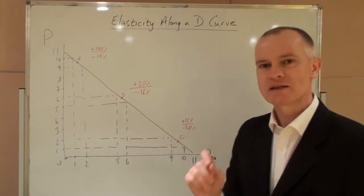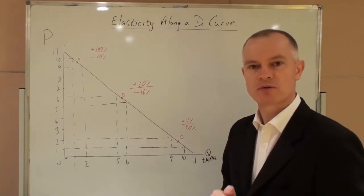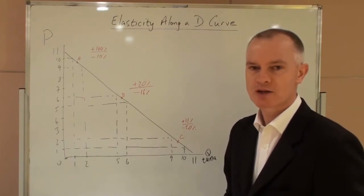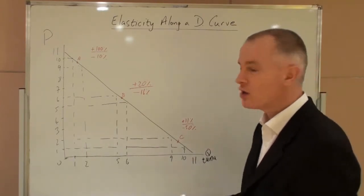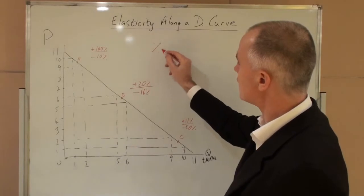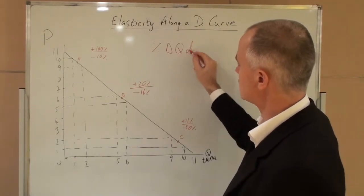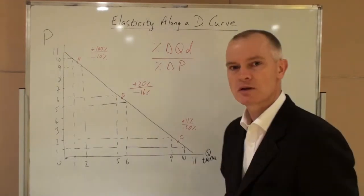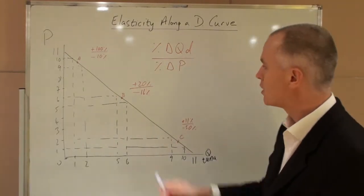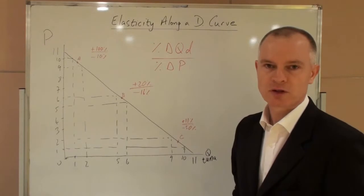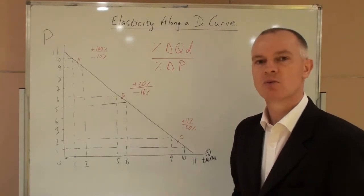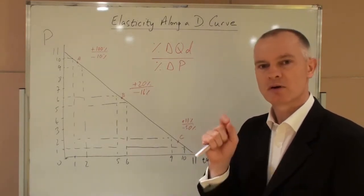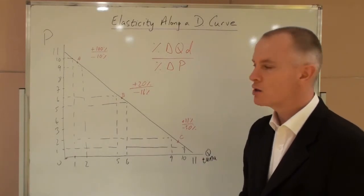Price elasticity of demand shows the responsiveness of quantity demanded to a change in price. The conventional way to calculate this is to compare the change in quantity demanded with the change in price which caused that change in demand. We always have to be careful using percentages because a percentage will very much depend upon the start point for the calculation.